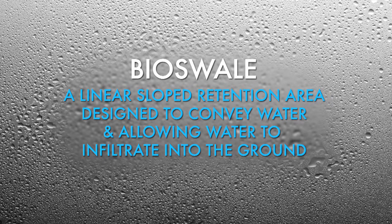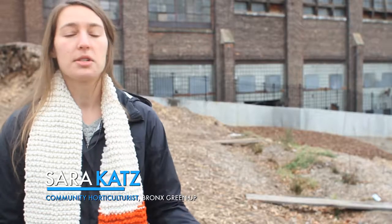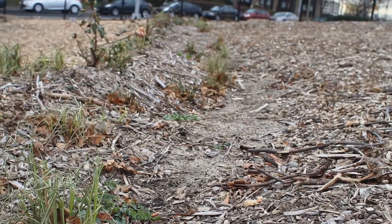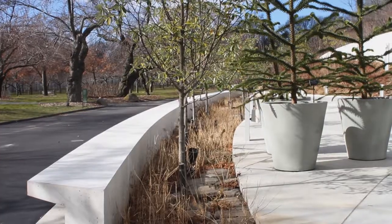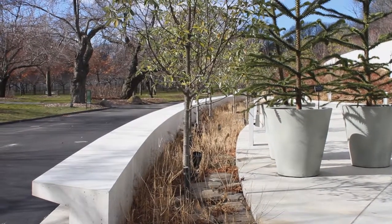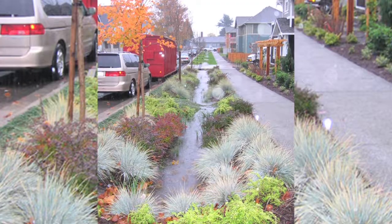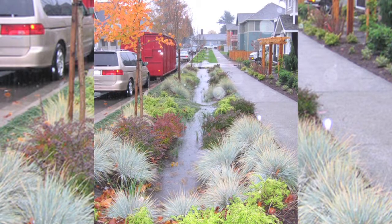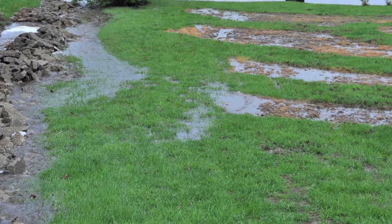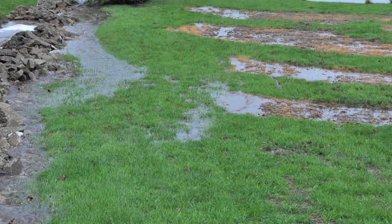Another example of stormwater management techniques is a bioswale. A bioswale is a linear sloped retention area designed to convey water, allowing it to infiltrate into the ground and prevent erosion. Both the swale and the rain garden do essentially the same thing — they convey water, where the water is meant to just stand there and slowly be conveyed into the earth below it.